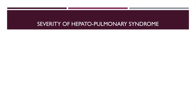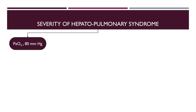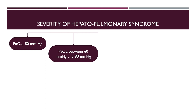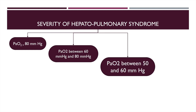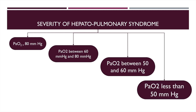The severity of hepatopulmonary syndrome can be graded based on the arterial oxygen partial pressure. A PaO2 of more than 80 mmHg is mild; between 60 and 80 mmHg is moderate; between 50 and 60 mmHg is severe; and a PaO2 of less than 50 mmHg is very severe hepatopulmonary syndrome.